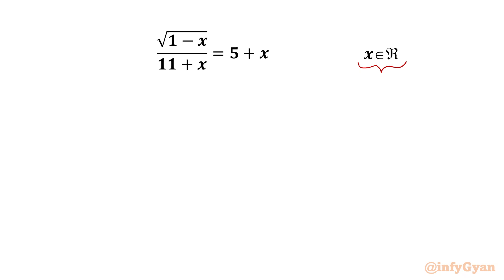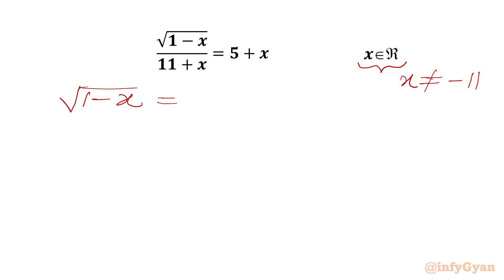Let's get started by writing that the denominator cannot be 0, so our answer x cannot be negative 11. Now we can write our equation: square root of (1 minus x) will be equal to (5 plus x) times (11 plus x).